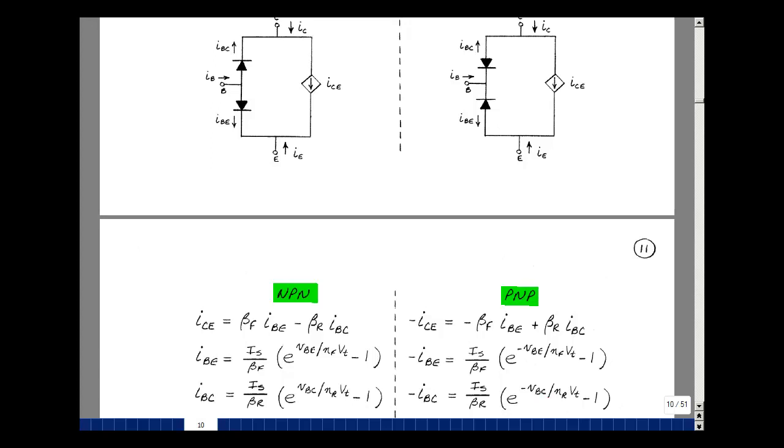As you can see, the SPICE model for the PNP and the NPN are the same. It's just that signs are changed in going from one to the other. This is easy for a computer to do, but kind of hard for a human being to do.